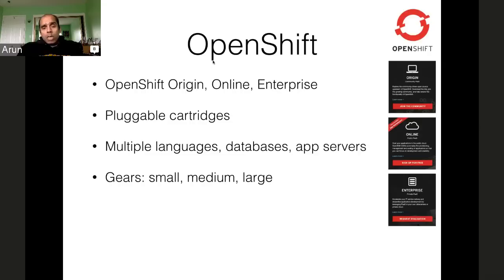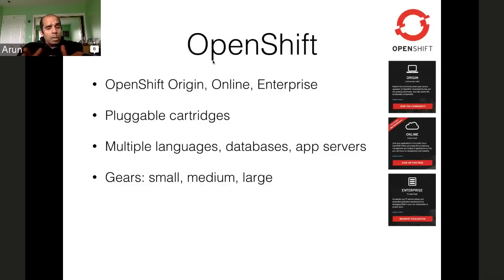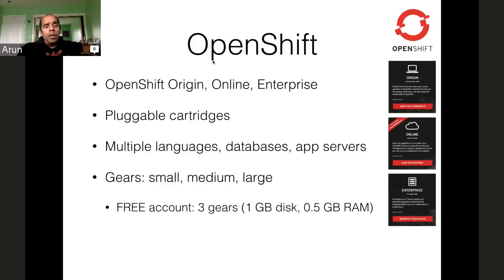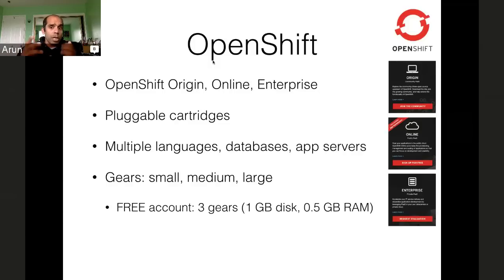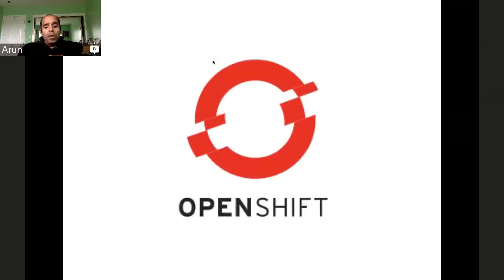The way OpenShift works is the concept of gears — a compute and disk capacity unit. There are three kinds of gears: small, medium, and large. If you sign up for a free account on openshift.com, you get three gears, each with one gigabyte of disk space and half a gigabyte of RAM. On one gear you can install an app server, on another a database server, and on a third you can run a continuous integration tool like Jenkins.